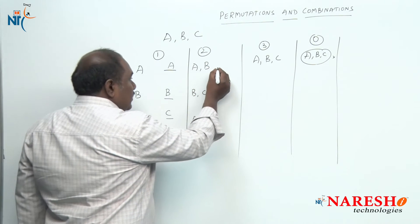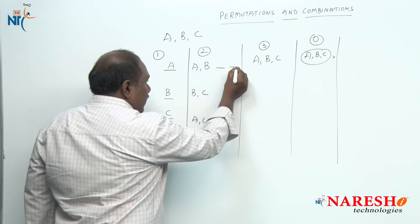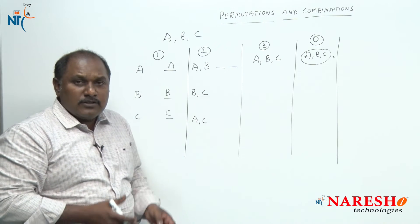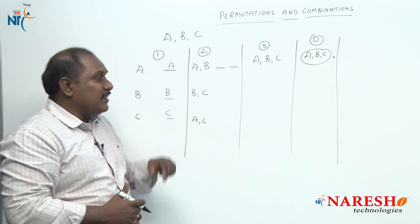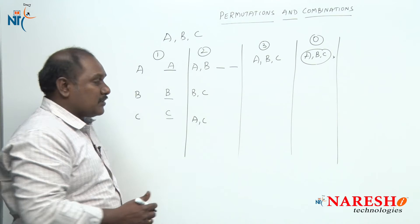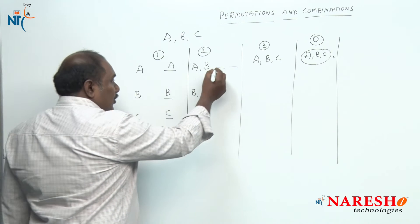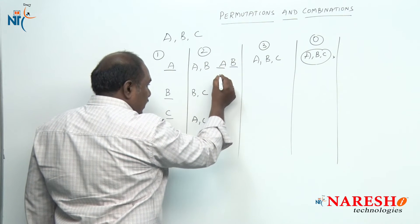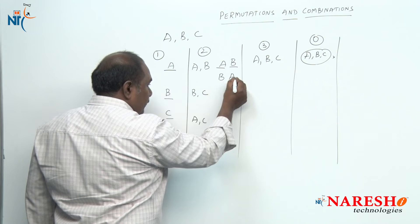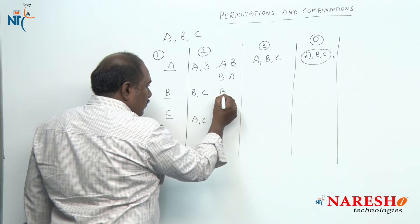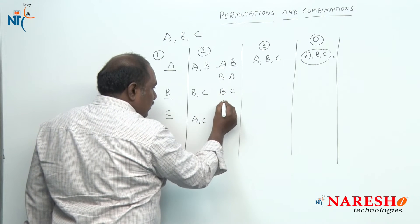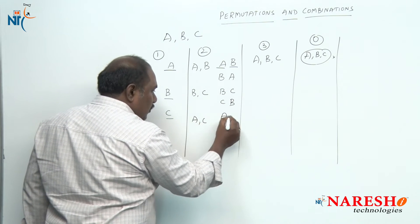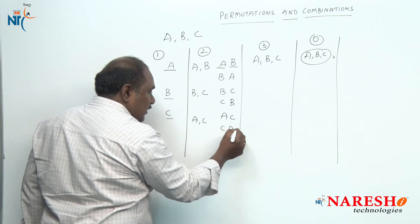If they have two tickets, there are two places available for them. In how many different ways can they sit? If A and B go, they can sit as AB or BA. If B and C go, BC or CB. If A and C go, AC or CA — giving six different seating arrangements.